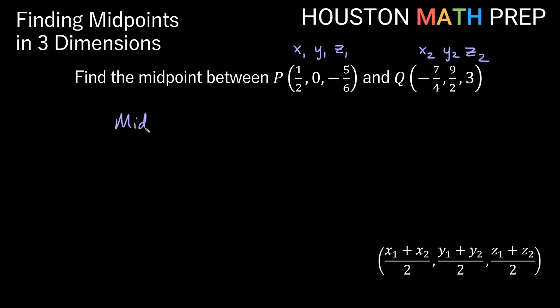So our midpoint in this case, if we write out what we have here in the formula, again just averaging the x's, the y's, and the z's. So if we're averaging the x's, that will be 1 half plus negative 7 over 4 over 2. The y will be 0 plus 9 halves over 2.